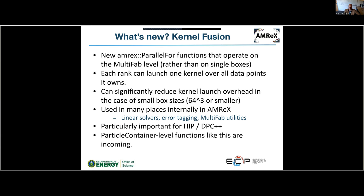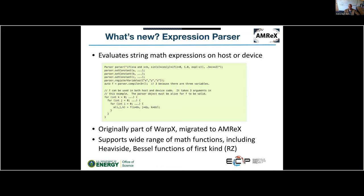Another new feature is the expression parser. This was originally developed for one of the projects but has been migrated into AMReX because it could be more broadly useful. For example, if you want to specify a specific initial plasma density profile as a function of x, y, z but don't want to write a new C++ function and recompile every time you change it.